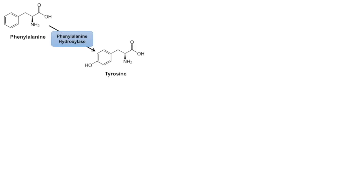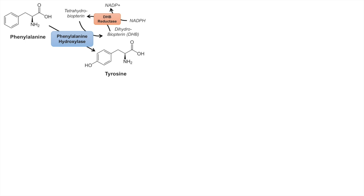It all starts with phenylalanine, which is brought into the body through dietary intake. It undergoes a hydroxylation reaction on the benzene ring to form tyrosine, carried out by the enzyme phenylalanine hydroxylase. This step requires tetrahydrobiopterin — the hydroxyl group gets transferred from tetrahydrobiopterin to phenylalanine to produce tyrosine, and the tetrahydrobiopterin becomes dihydrobiopterin. Dihydrobiopterin can be recycled back into tetrahydrobiopterin by the enzyme dihydrobiopterin reductase with the cofactor NADPH.